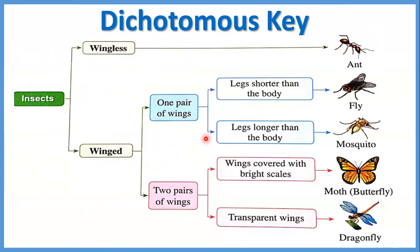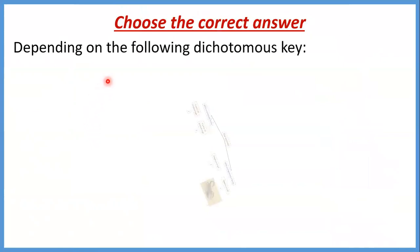لو one pair of wings، نعمل لها order of pairs تاني: إما legs shorter than the body — ساعتها دي هتبقى الfly، أو legs longer than the body — وساعتها دي هتبقى الmosquito. لو two pairs of wings، إما wings covered with bright scales زي الbutterfly، أو transparent wings زي الdragonfly. ده معنى كلمة dichotomous key — إن إحنا بنعمل arrangement للcharacteristics in pairs عشان نقدر نعمل identification للliving organisms.